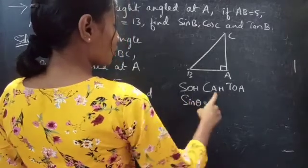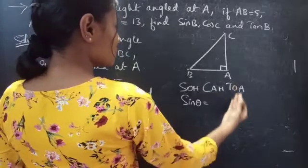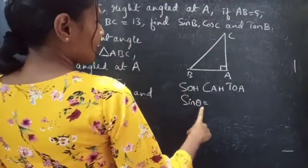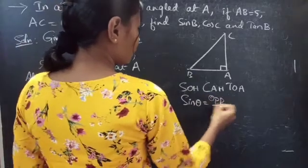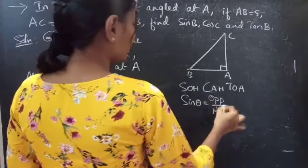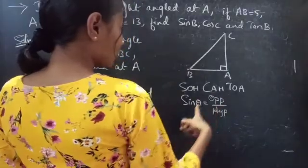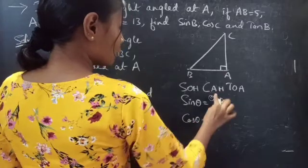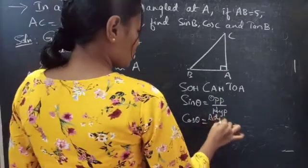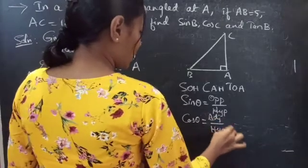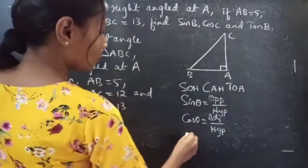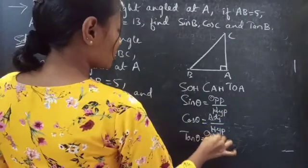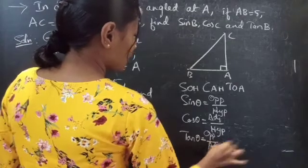Using sine, cos, tan you can also find cosecant, secant, and cot. Using SOH: sine theta equals opposite by hypotenuse. Using CAH: cos theta equals adjacent by hypotenuse, where A is for adjacent and H is for hypotenuse. Using TOA: tan theta equals opposite by adjacent.